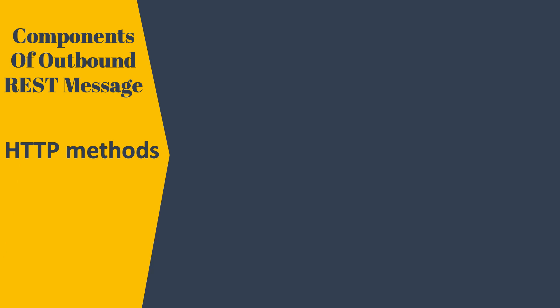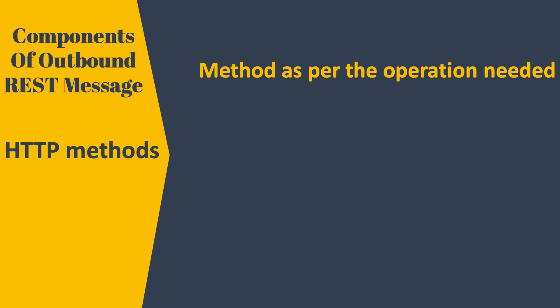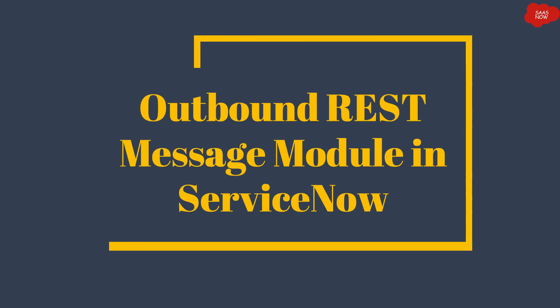The last important component is HTTP methods, where you define what type of operation you are going to perform on the third-party application. GET is used for fetching data from another system. POST is used to create a record in another system. We also have PUT and DELETE methods to update and delete records respectively.